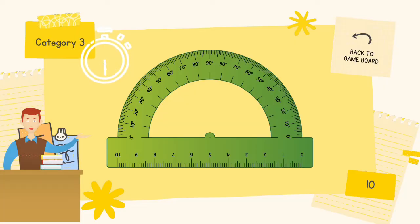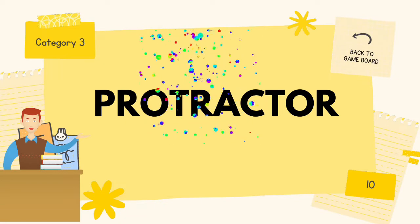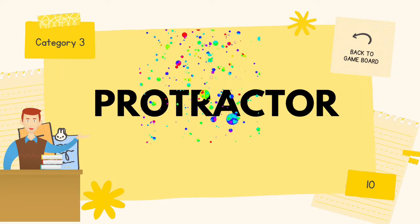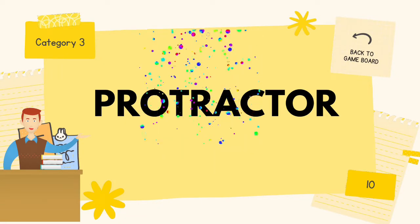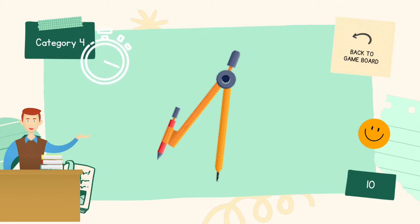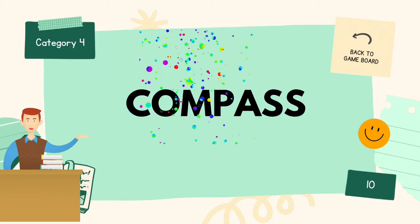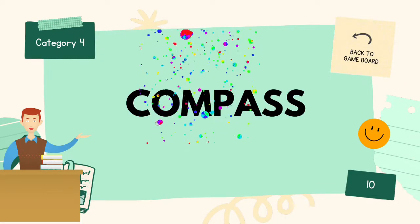It is used for measuring and setting of angles other than those obtainable with the triangles. The correct answer is protractor. For the last one, it is used to draw circles, arcs, radii, and parts of many symbols. The correct answer is compass.